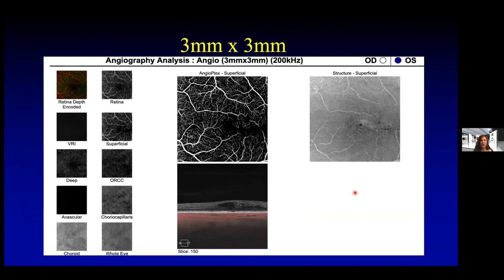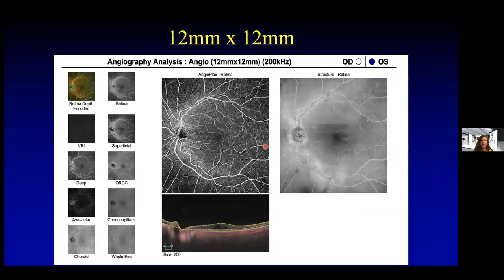Here's another patient in line with my current screening protocol for diabetic retinopathy. I do a three by three millimeter scan to evaluate the fovea for macular edema, looking at the superficial plexus. Then I do a wider scan — either a 12 by 12 or a 15 by 15 — to look at the peripheral retina for any signs of capillary dropout or retinal neovascularization.